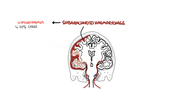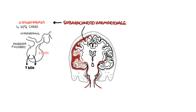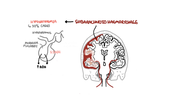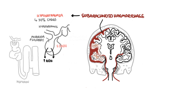Hyponatremia is another complication and develops in up to 30% of patients with subarachnoid hemorrhage, probably mediated by hypothalamic injury. The water retention that leads to hyponatremia may result from either the syndrome of inappropriate secretion of antidiuretic hormone (SIADH) or from cerebral salt wasting. In SIADH, excess ADH is produced, which targets the kidneys and causes inappropriate retention of water, causing hyponatremia.